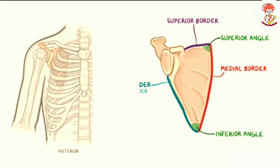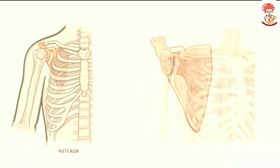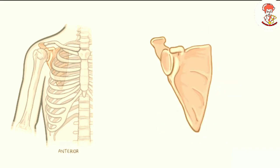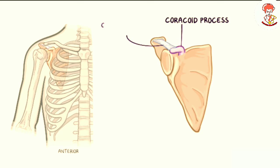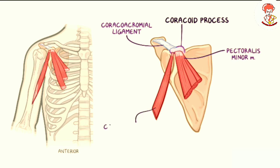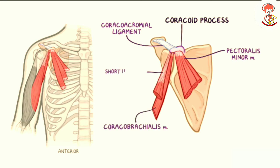At the lateral part of the superior border there is a small indentation called the scapular notch, through which the suprascapular nerve passes. Immediately lateral to the notch, the scapula has a bony projection called the coracoid process, which is a bony hook that first projects anteriorly and then curves toward the lateral side, similar to a bent finger. The coracoid process serves as an attachment point for four structures: the coracoacromial ligament, the pectoralis minor muscle, the coracobrachialis muscle, and the short head of the biceps brachii.